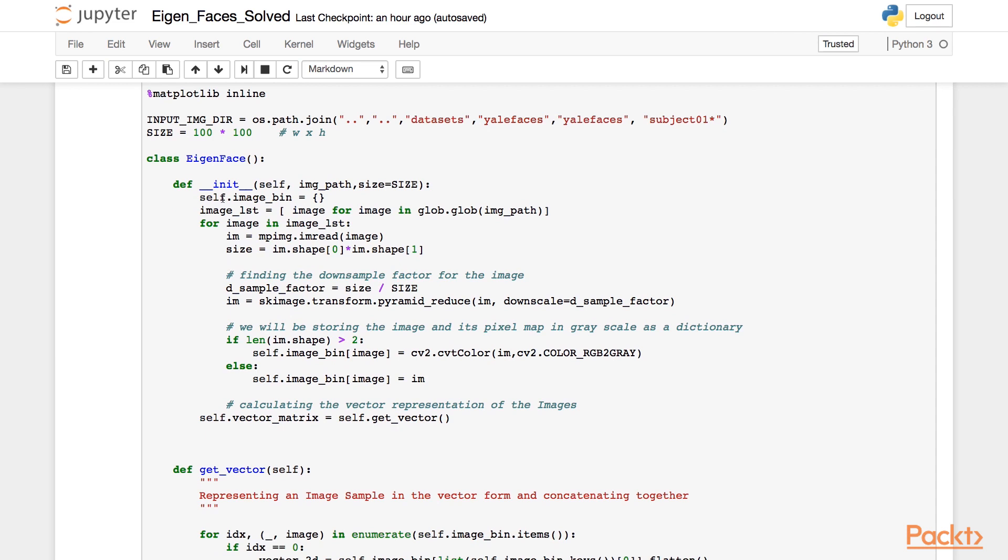For this example, we have also defined an eigenface class that initializes with the image path, which contains a subset of the Yale faces. We also compute a down sample factor, which is the ratio of the size of the image in the Yale dataset with the constant size that we have defined earlier. Once we are done with reducing the size of the image by the sample factor, we store this image into image bin and calculate the vector representation of the reduced images by using the function getVector.